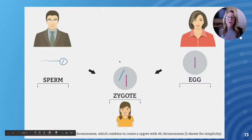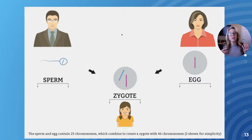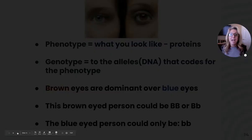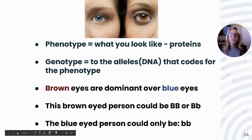Before we get started, let me remind you: sperm and eggs are haploid — they contain one member of the homologous pair. In a zygote, you restore the homologous pair. Because we are diploid, we have two copies for each allele. When we talk about phenotype, that's what somebody looks like — for instance, this individual has blue eyes and this one has brown eyes.